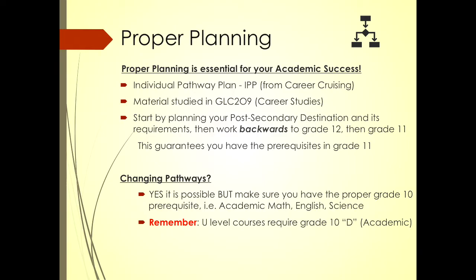Start by planning your post-secondary destination by working backwards. Peruse the college and university websites and check out what those admission requirements are. 'Oh, I didn't know I needed a physics — when do I take physics? I need it for grade 12 and I'm university bound, so I need a grade 11 course as a prerequisite.' You need to start doing that now. Work backwards — it is the best way for you to plan efficiently. And if you're changing your pathway, it can be done, though it may require some additional courses.